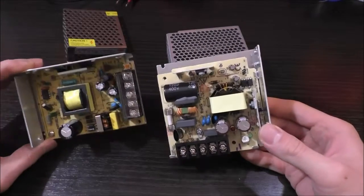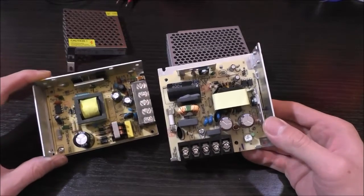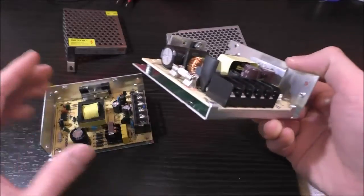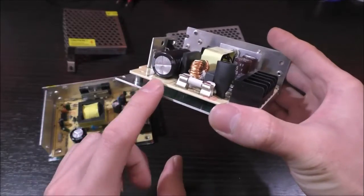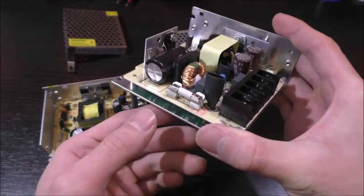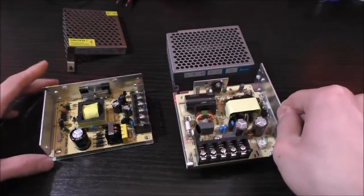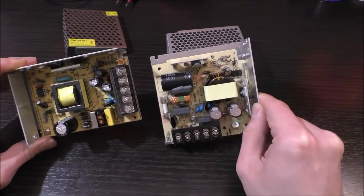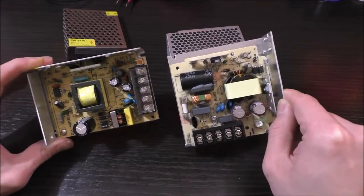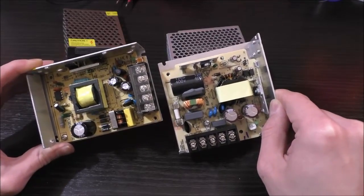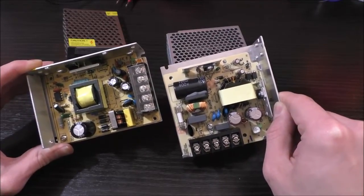But on first impressions, you can see the similarities between these two power supplies. They both are made of the relatively inexpensive paper board instead of the more expensive fiber board PCB material. And you can also see how they look very similar in terms of the components and obviously a lot less complicated than the COSEL power supply.